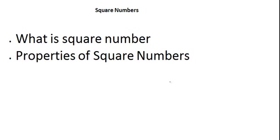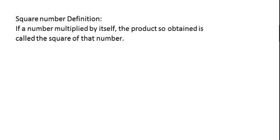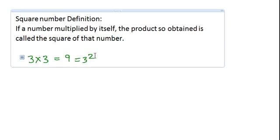In this session, we are going to learn about square numbers. If a number is multiplied by itself, the product so obtained is called the square of that number. For example, if 3 is multiplied by 3, that equals 9 and it is represented as 3 squared. We say that 9 is the square of 3.